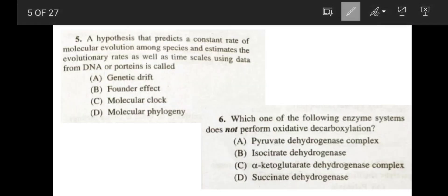Next question. A hypothesis that predicts a constant rate of molecular evolution among species and estimates the evolutionary rates as well as time scales using data from DNA and protein is called molecular clock. This hypothesis is known as molecular clock.